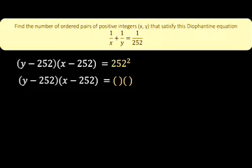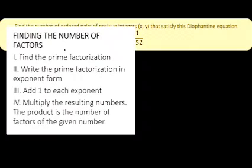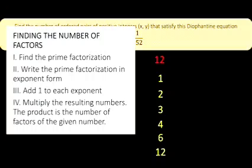Fortunately, we have this process of finding the number of factors of any number. Let's demonstrate this first with a smaller number, let's say 12. How many factors are there in 12? First, we know that 12 is divisible by 1, 2, 3, 4, 6, and 12.